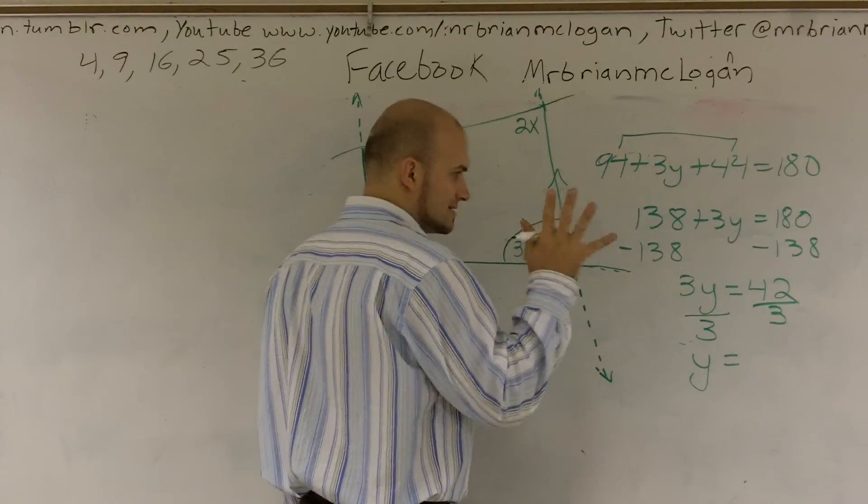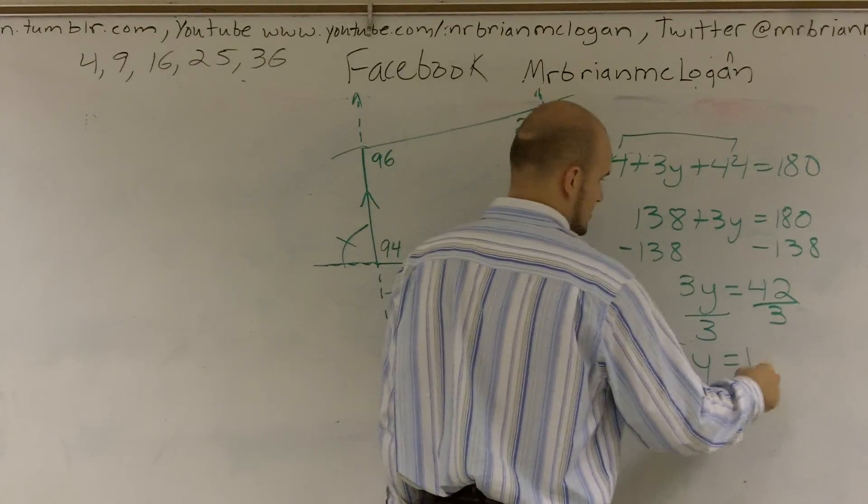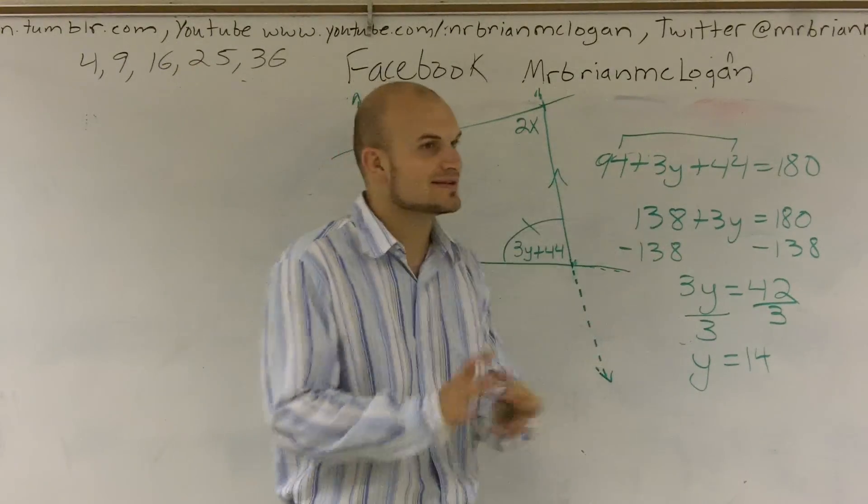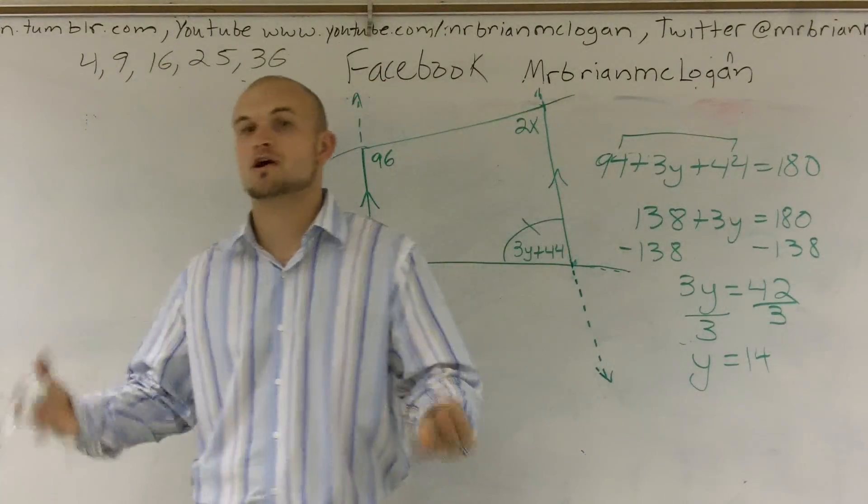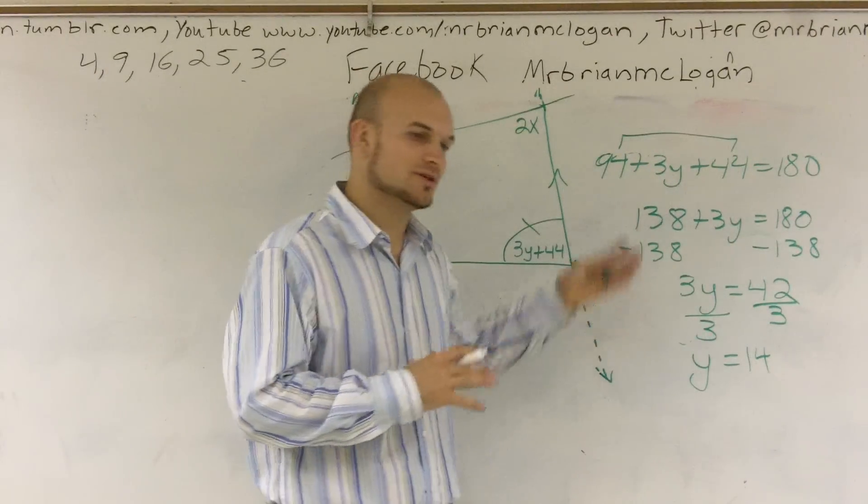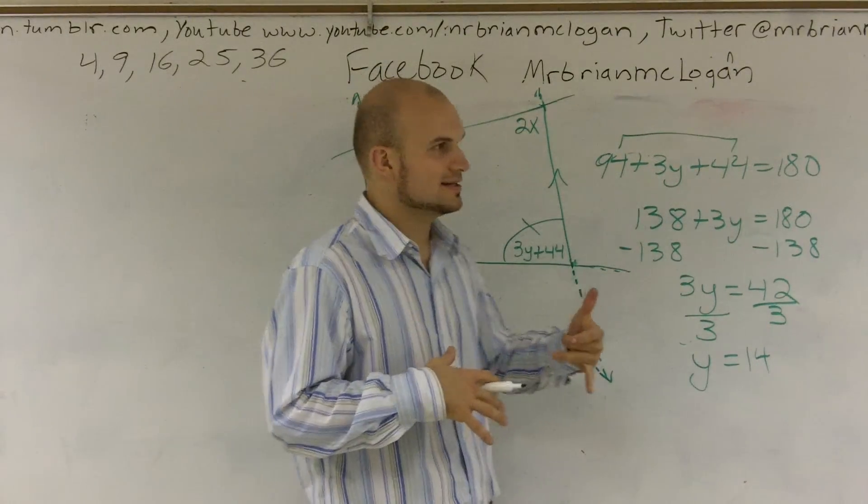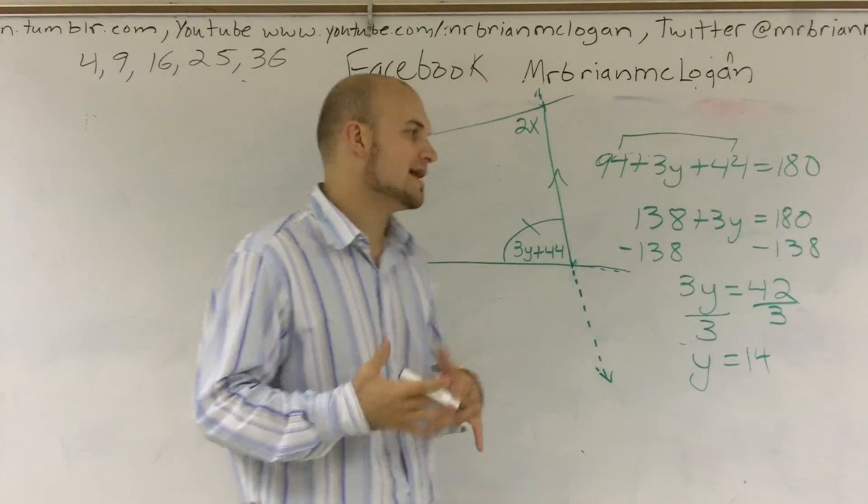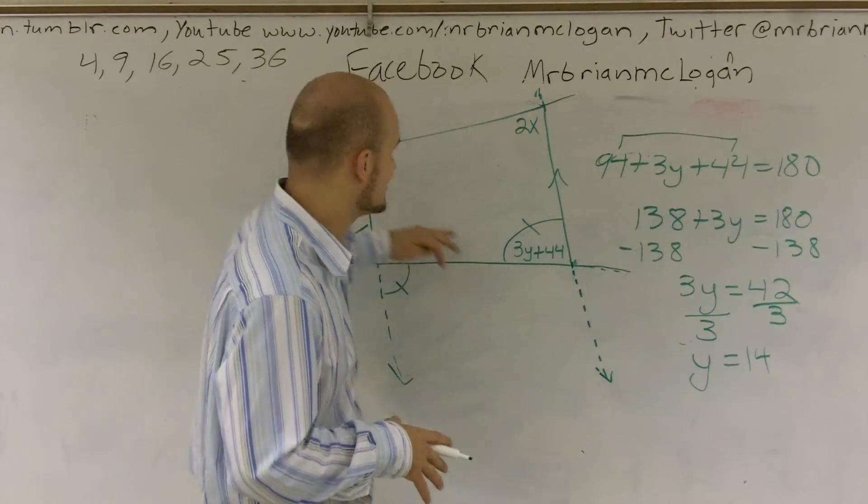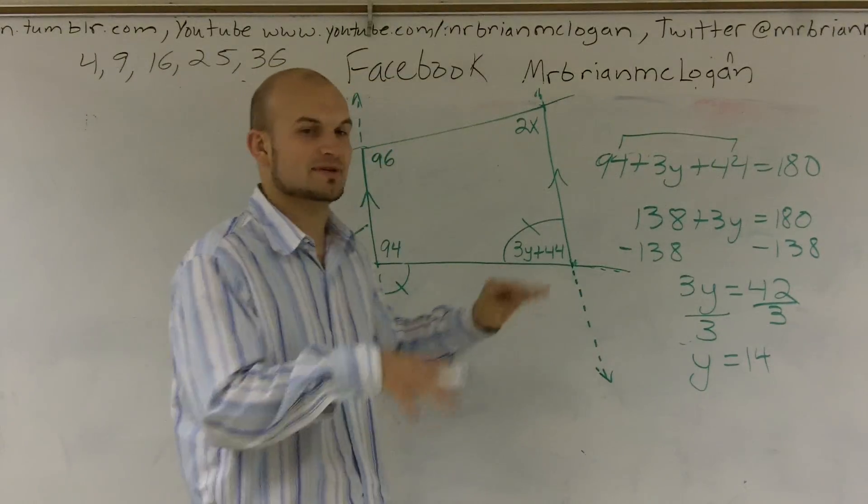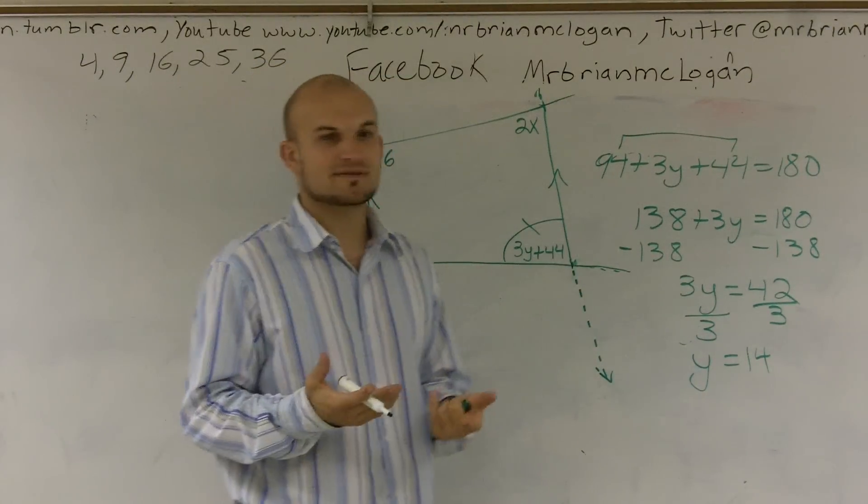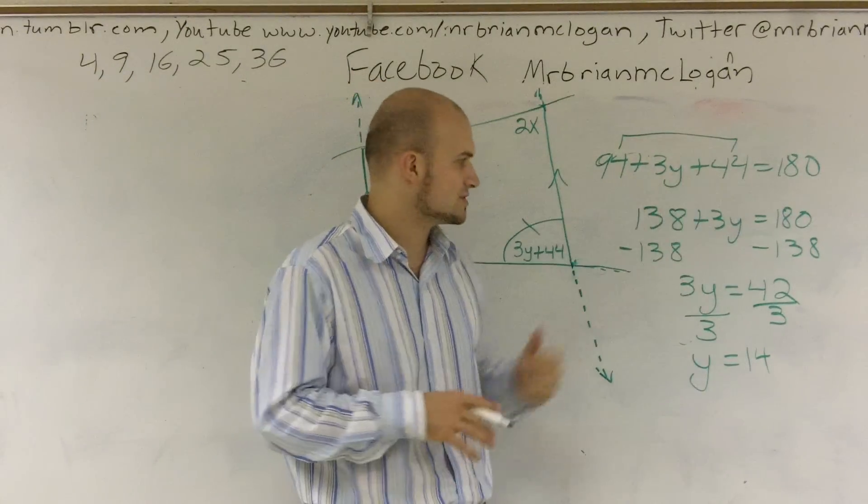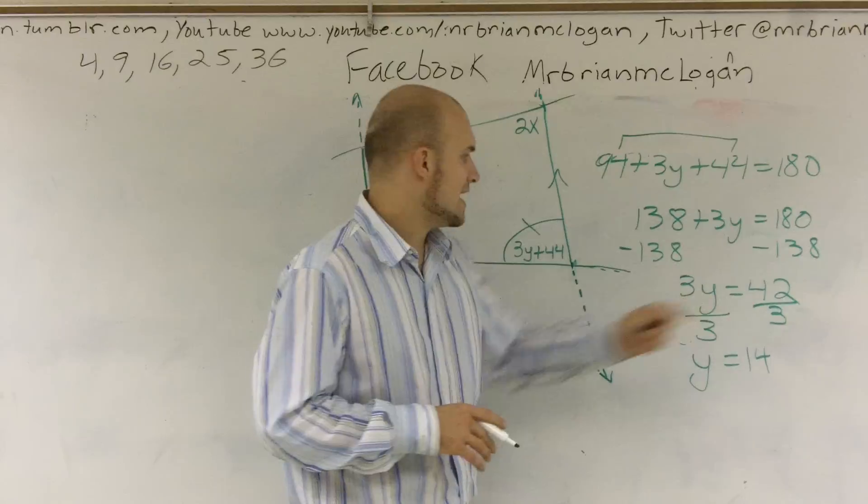One reason why I stopped and knew I made a mistake is I noticed I had a decimal. Now decimals actually are very common. However, usually when doing these problems from your book, it should tip you off - hey, I need to make sure I'm doing everything correctly. More often than not, we don't deal with decimals because we're trying to make you guys understand the concept and not worry so much about the numbers. Just because you have a decimal does not mean it's wrong, but that should tip you off to at least double check. Now I have y equals 14.